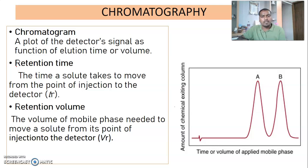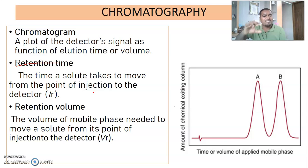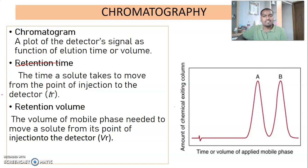Retention time and retention volume: when we apply the sample in a chromatographic procedure, it passes from the point of injection and reaches the detector. The time taken by the given analyte to travel from the point of injection to the detector is called retention time. The volume of mobile phase needed to move a solute — also called analyte — from its point of injection to the point of the detector is called retention volume.